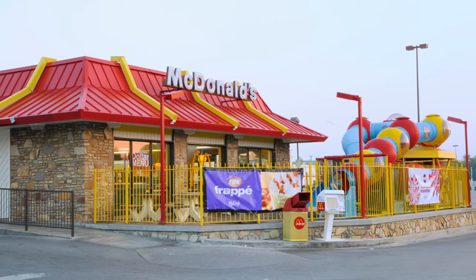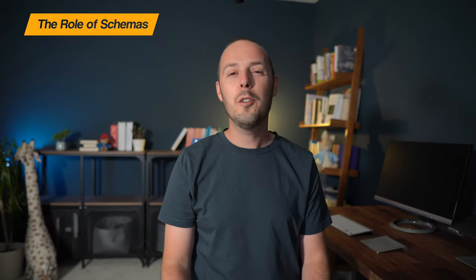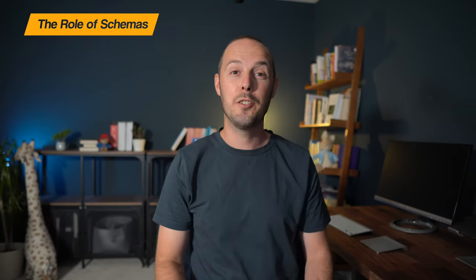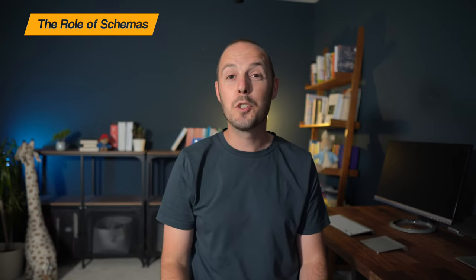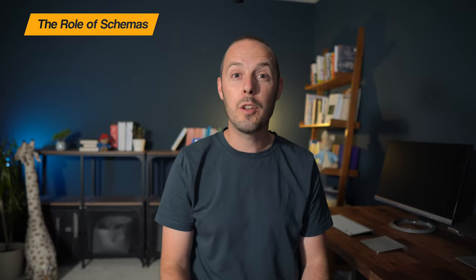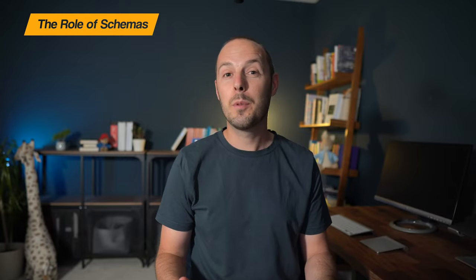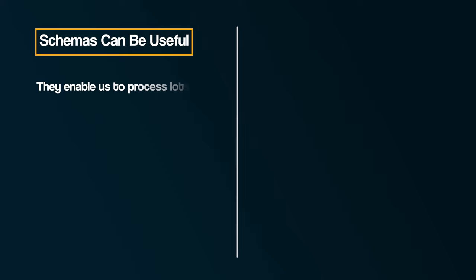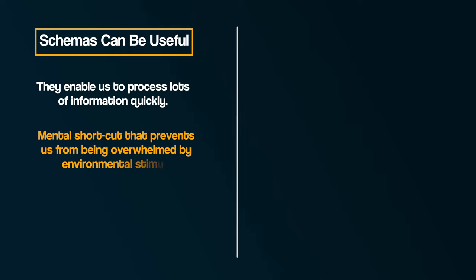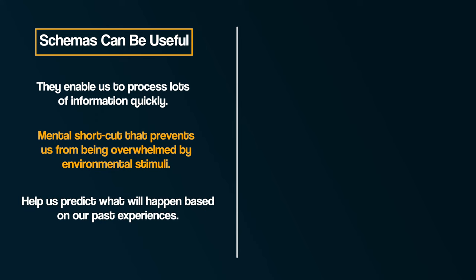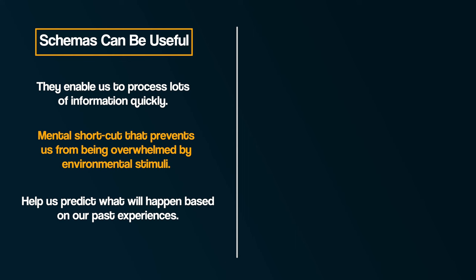Is McDonald's a restaurant? Technically they call themselves a restaurant, but we all know it's different from your typical restaurant. Can you imagine standing at the door of McDonald's waiting for a waiter to ask if you've booked? Schemas can be very useful — they enable us to process lots of information quickly, acting as a mental shortcut that prevents us from being overwhelmed by environmental stimuli. They work on the basis that we process stimuli in the simplest and most economical route possible, and also help us predict what will happen based on past experiences, making life simpler.